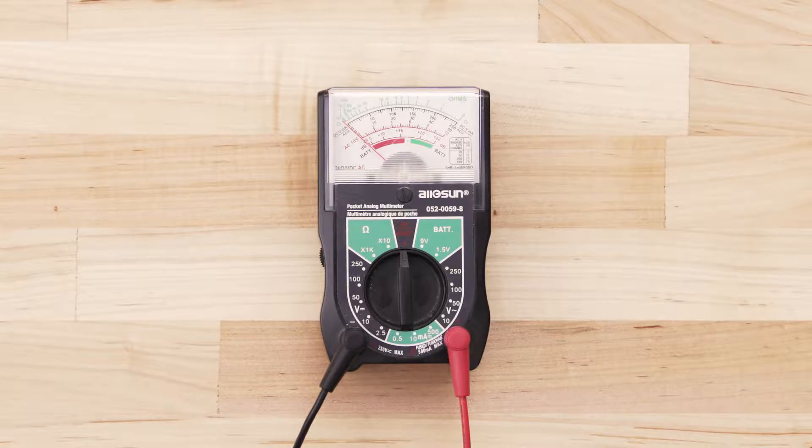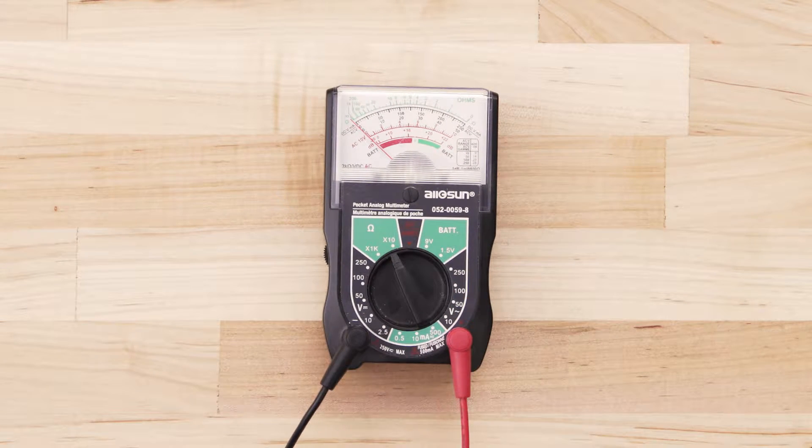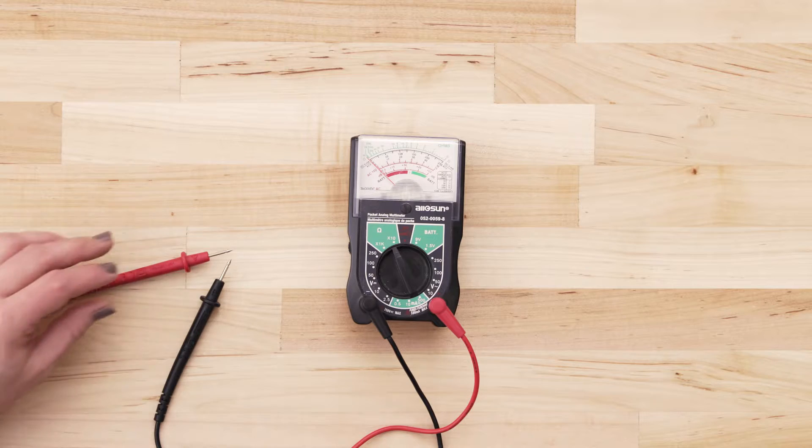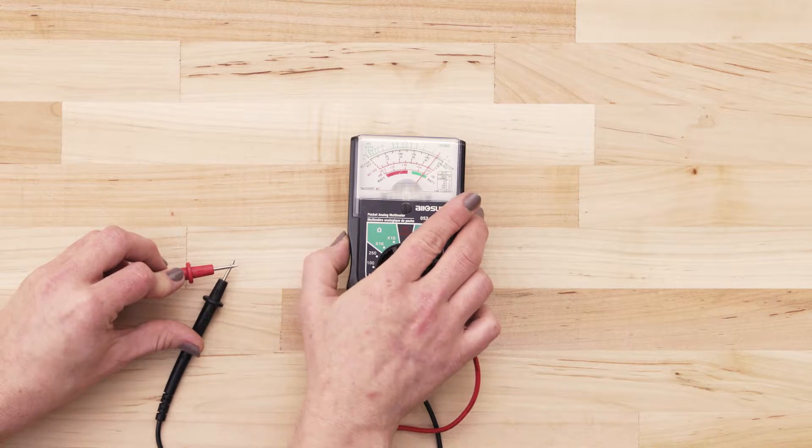If you use an analog multimeter, set the multimeter to the lowest ohms of resistance. Next, touch the probes together and adjust the needle until it's calibrated at zero.